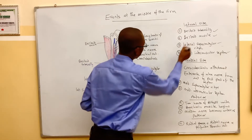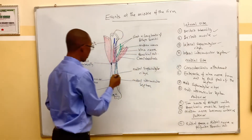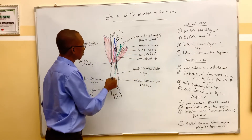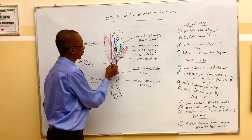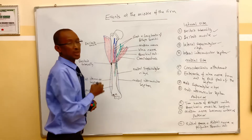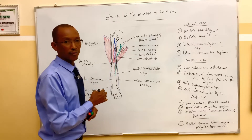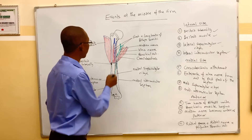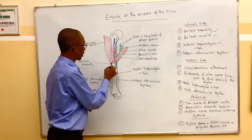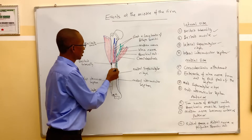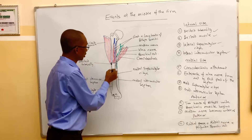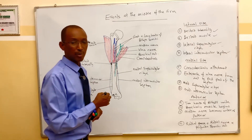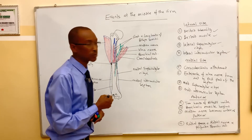The lateral supracondylar ridge of the humerus also takes origin from the middle of the humerus, and then this lateral supracondylar ridge gives attachment to the lateral intermuscular septum.